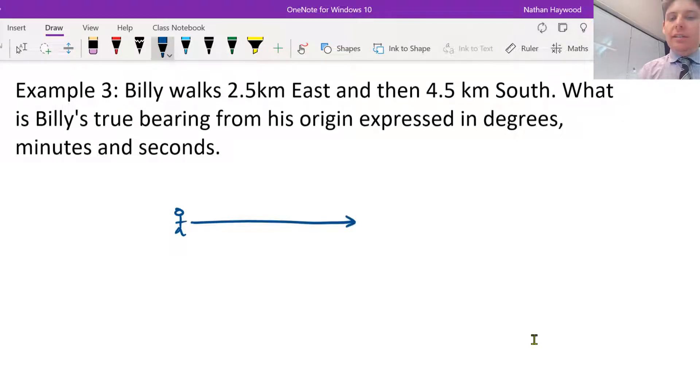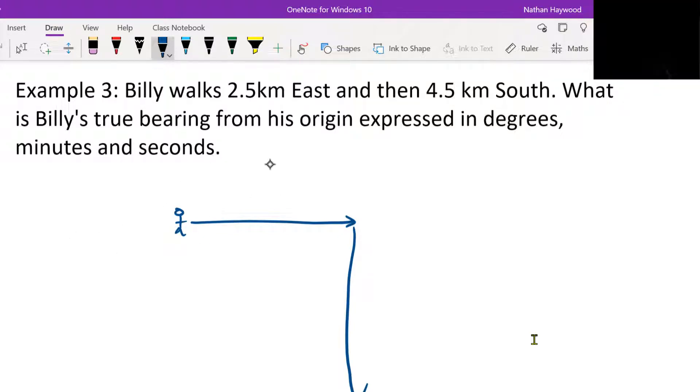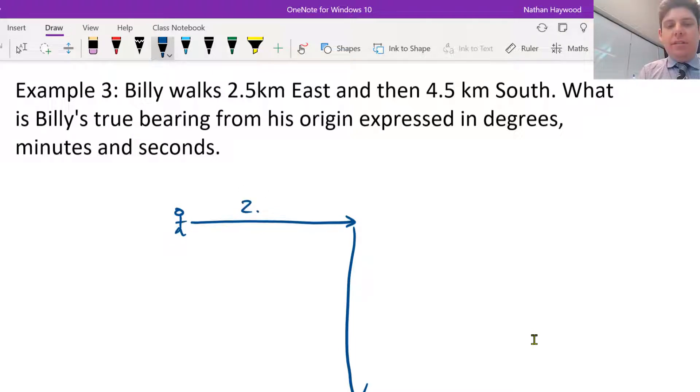Billy goes east and then Billy goes south, so never eat soggy Weet-Bix if you forget east. 2.5 and 4.5. This is north, and it wants the bearing, the true bearing from his origin.